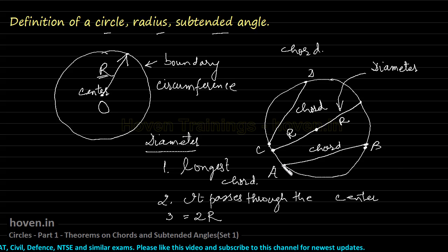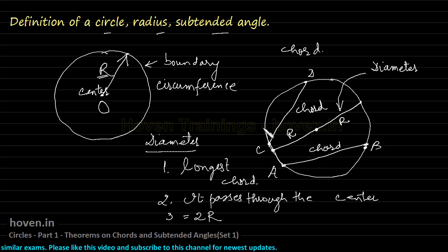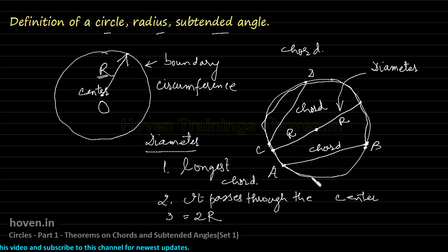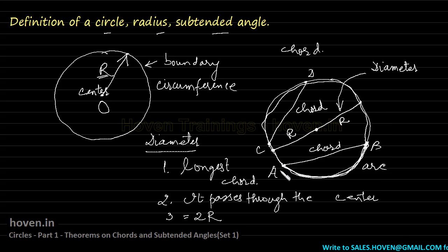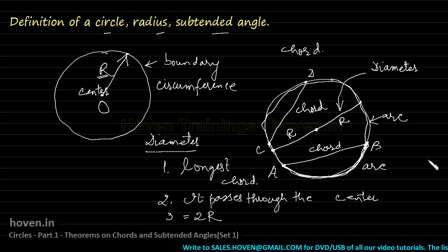A chord divides the circle into two parts — one part and the other part. So each chord divides a circle into two parts, and these parts are called two arcs. This arc is the AB arc, one part into which the chord has divided the circle, and the second part is also called an arc of the circle.